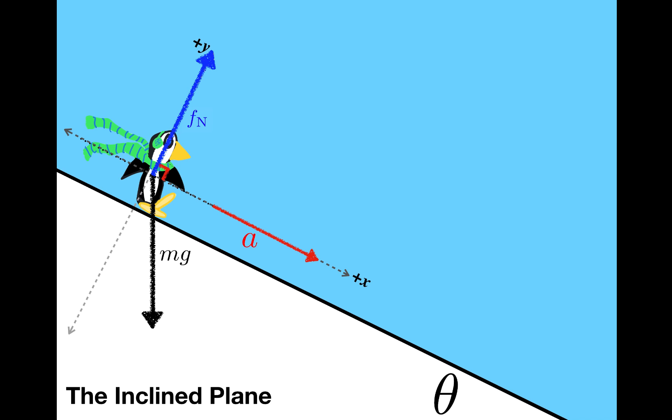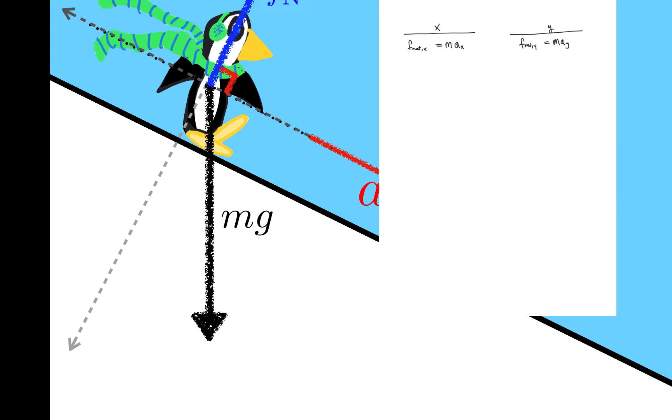When I apply Newton's second law, f net equals ma, I'm going to have two equations, one in the x direction and one in the y direction. And to use these equations, mg will need to be resolved into components. Those components need to be parallel to the axes, which, by the way, means that the components will need to be perpendicular to each other.